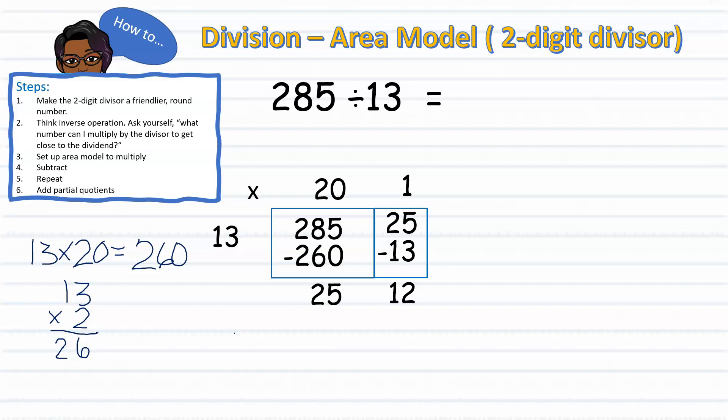Now, the last step is to add up the partial quotients. 20 plus 1 gives me 21 with a remainder of 12. Therefore, I know that 285 divided by 13 equals 21 with a remainder of 12.